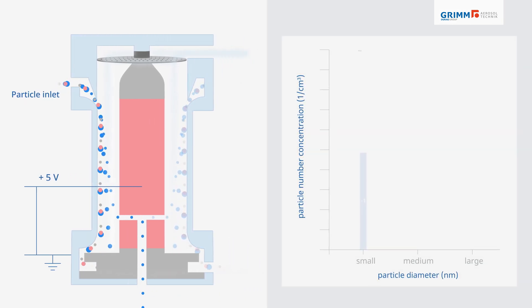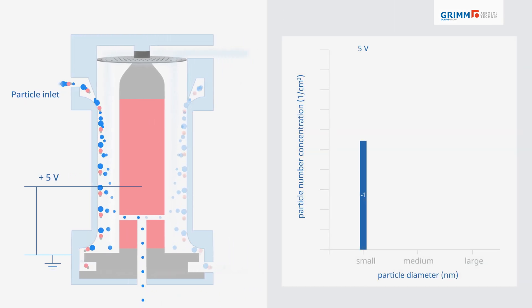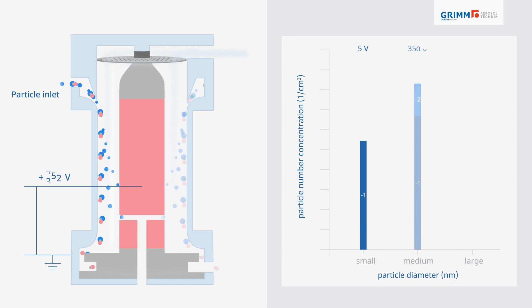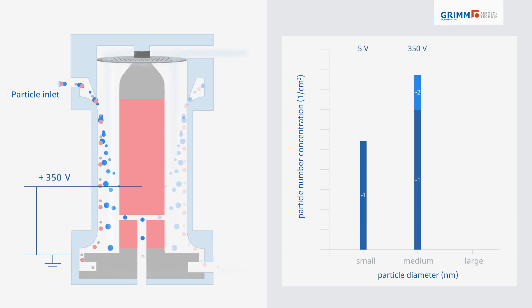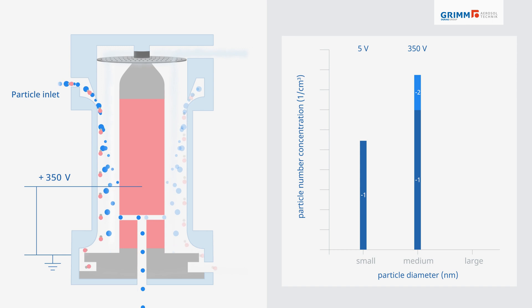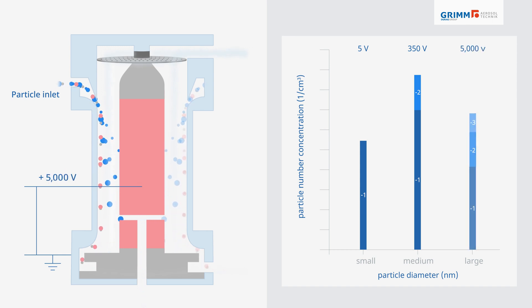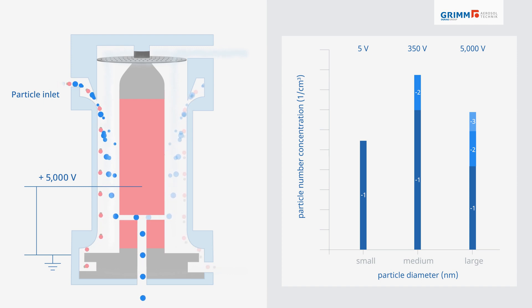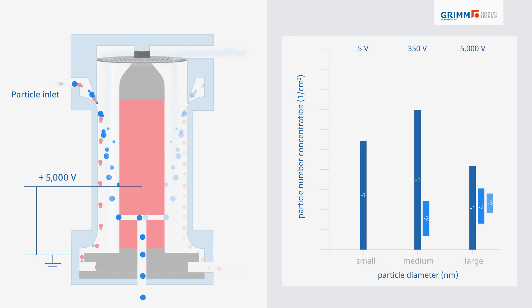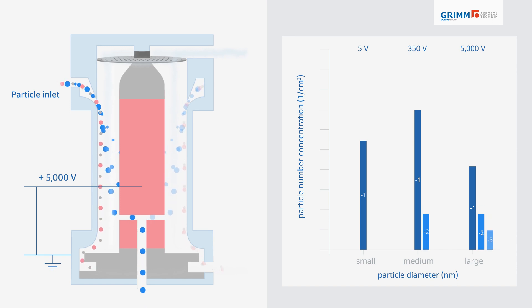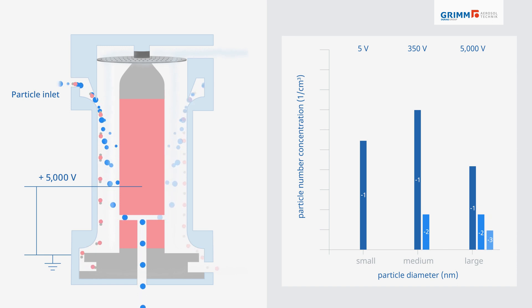This graph shows the correlation between applied voltage and particle size derived from differing electrical mobilities. Larger particles may be multiply charged, and this increased electrical mobility causes them to act like smaller particles. A multiple charge correction must be applied to sort particles into the correct size bins.